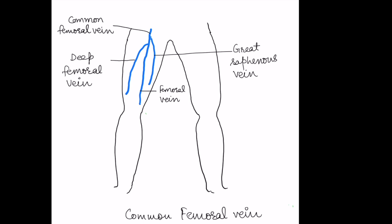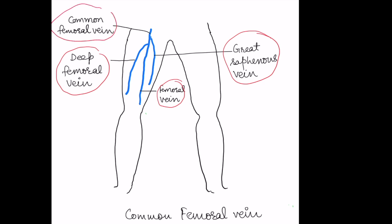This is a schematic diagram of the femoral vein. The femoral vein starts at the level of the adductor hiatus. It is a continuation of the popliteal vein and there are two major tributaries of the femoral vein — one is the great saphenous vein and another is the deep femoral vein. They join the femoral vein, and thereafter it is known as the common femoral vein, which continues as the external iliac vein into the abdomen.